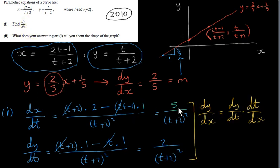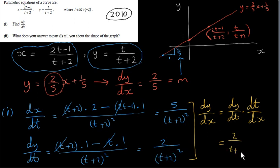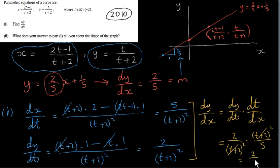Now we find dy/dx. We take dy/dt and multiply by dt/dx — these derivatives behave like fractions, so the dt's cancel: dy/dx = (dy/dt)·(dt/dx). dy/dt = 2/(t + 2)²; dt/dx is dx/dt turned upside down = (t + 2)²/5. The (t + 2)² factors cancel, and we get dy/dx = 2/5, confirming the earlier result.